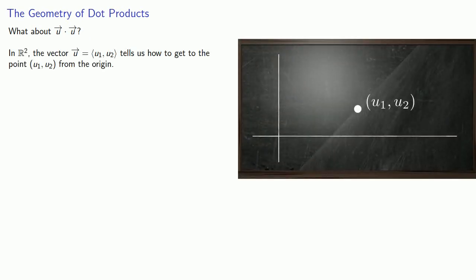So what about the dot product? In R2, the vector u1, u2 tells us how to get to the point u1, u2 from the origin. The dot product itself is going to be u1 squared plus u2 squared. And so now we want to ask ourself, self, where have we seen u1 squared plus u2 squared before?